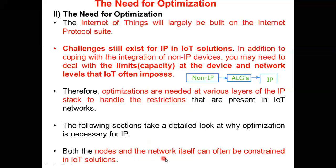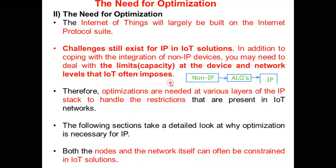Both the nodes and the network itself can often be constrained in IoT solutions. Nodes means devices — they are constrained due to low battery and low processing power. Even the network is constrained and unstable. The connectivity is constrained in nature because it is unstable. Both nodes as well as the network in IoT are unstable and constrained in nature. These are all challenging things for us in making the network.